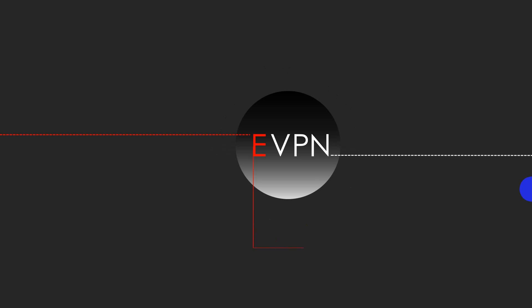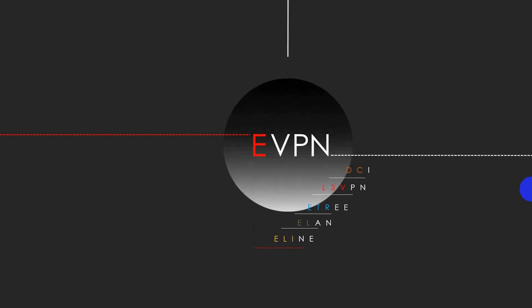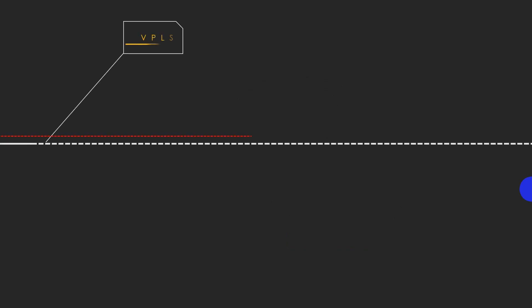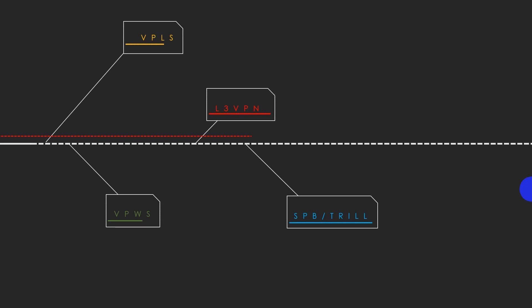eVPN is a next-generation, single control plane protocol that provides eLine, eLAN, L3 VPN, eTree, and data center interconnect. These services were previously provided by different and disjoint VPN technologies such as VPWS, VPLS, L3 VPN, and Trill SPB.